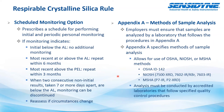Appendix A of the crystalline silica rule talks about different methods of sample analysis. Employers must ensure samples are analyzed by a laboratory that follows the procedures in Appendix A, which calls out six particular sample methods — your OSHA methods, your NIOSH methods, and your MSHA methods. In general, the methods contain gravimetric analysis combined with either X-ray diffraction or infrared spectrometry. The most popular methods are the NIOSH 7500 method and the NIOSH 7602 method.